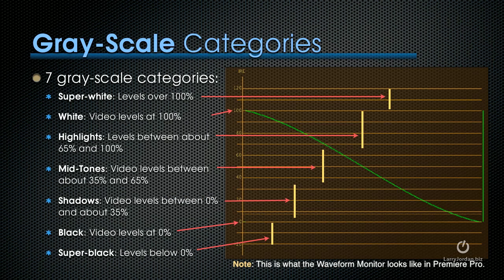The waveform monitor, which is illustrated in this large drawing on the right, shows us the grayscale values of an image, and it divides it into seven regions.